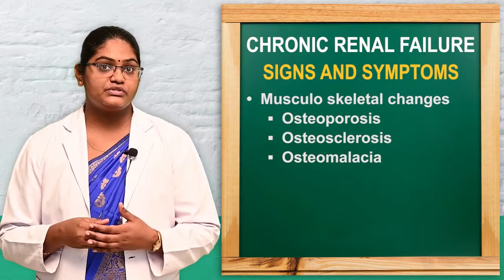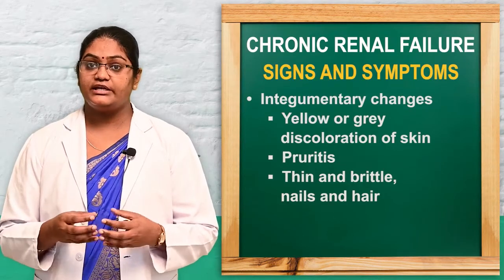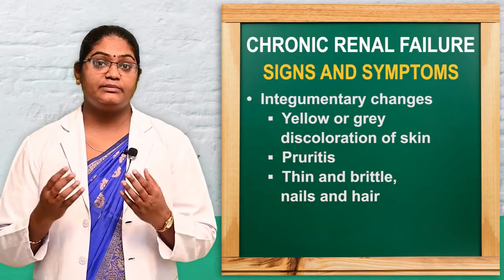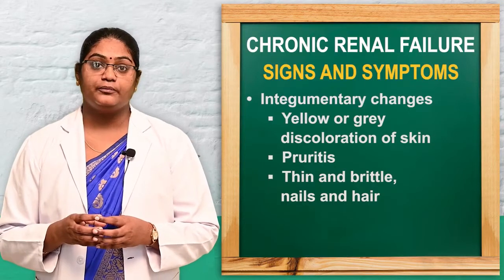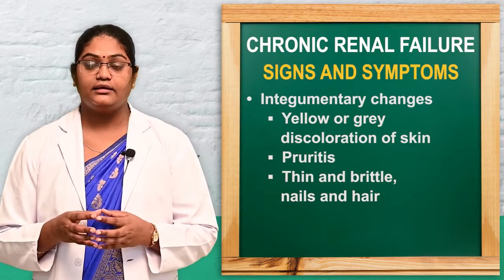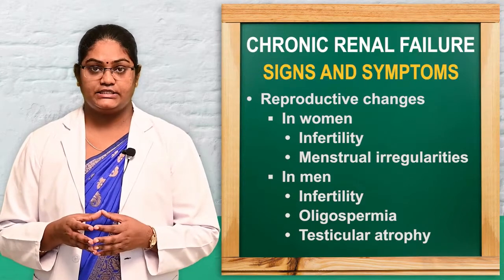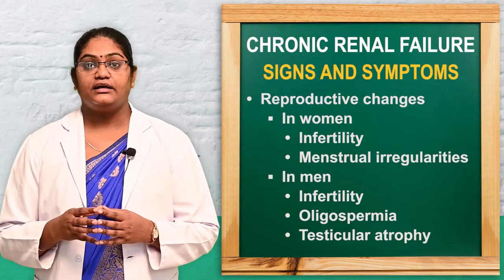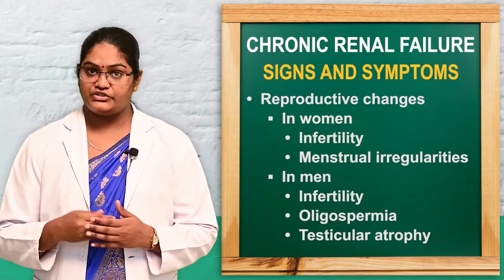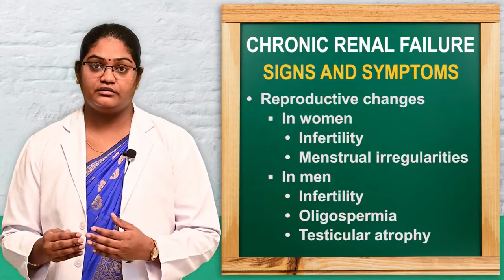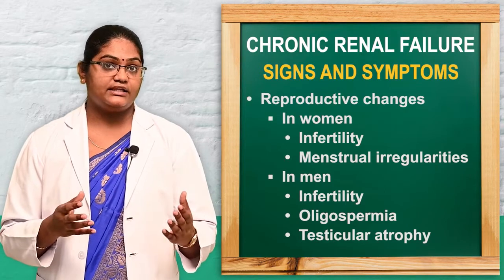Under the musculoskeletal system, symptoms include osteoporosis, osteomalacia, and osteosclerosis. In the integumentary system there is discoloration — grey or yellowish skin — pruritus (itching), thin and brittle nails, and brittle hair. Under the reproductive system, women experience menstrual disturbances such as irregular menstruation and infertility; men experience oligospermia and infertility.